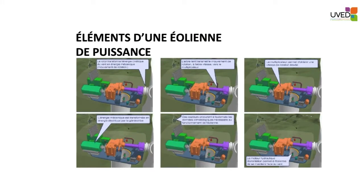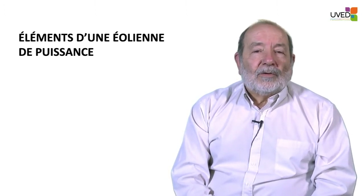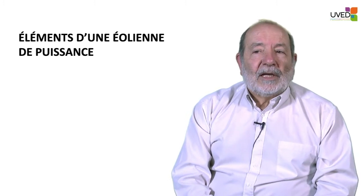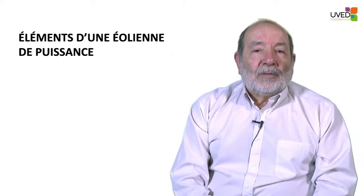Why a gearbox? Because the rotor rotates at approximately 20 to 30 revolutions per minute. At the output of the gearbox, the speed will be 1,500 revolutions per minute, which is compatible with the asynchronous generator that turns mechanical energy into electrical power.